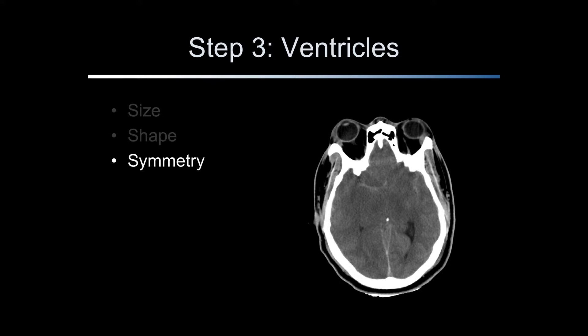Asymmetric ventricles may be a clue to a mass or edema. The reader must also recognize if the patient's head is not square in the CT scanner. This patient has asymmetric posterior horns of the lateral ventricles, as shown by the blue arrows. The third ventricle is also compressed, or effaced, as it should be seen in the same cut as the pineal gland, shown here by the yellow arrow. These effects are due to a large subdural hematoma seen on more superior slices.